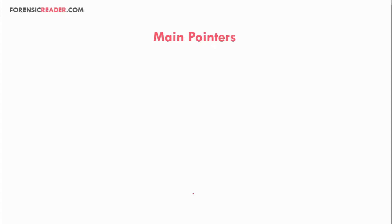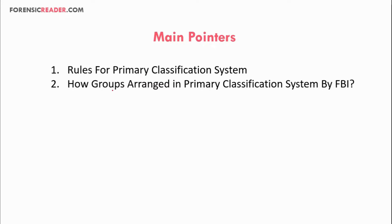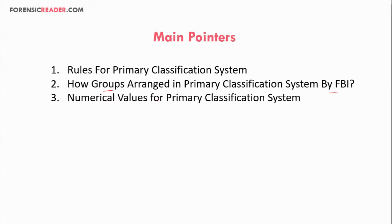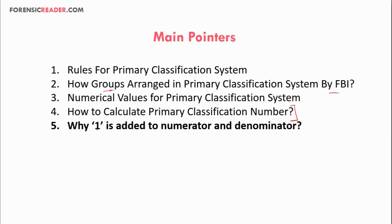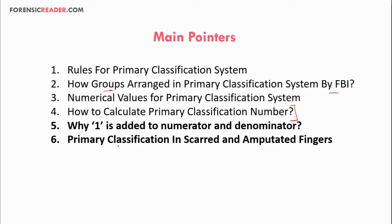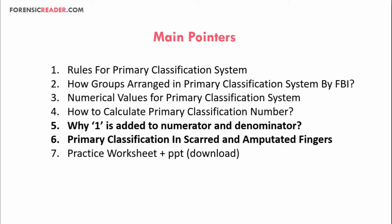The main pointers of this presentation are: first, the rules of the primary classification system; second, the groups arranged in the FBI database; third, the numerical values for the primary classification system; fourth, how to calculate the primary classification number; fifth, why one is added to the numerator and denominator; and sixth, the primary classification in scarred and amputated fingers — a very important topic. Lastly, you will get a practice worksheet.